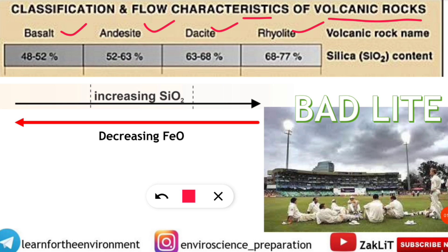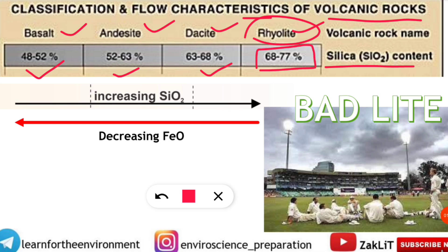Basalt has the minimum percentage of silica (SiO₂) at 48 to 52 percent. As we move up, andesite has more silica content at 52 to 63 percent. Dacite is at 63 to 68 percent. And rhyolite has the maximum concentration of silica among these four volcanic rock categories, at 68 to 77 percent.